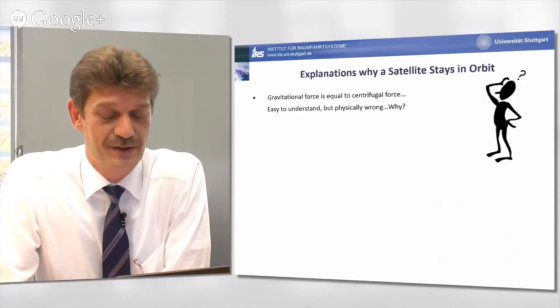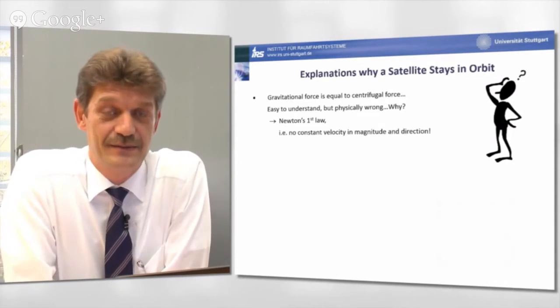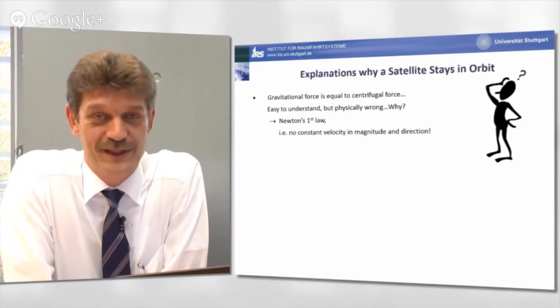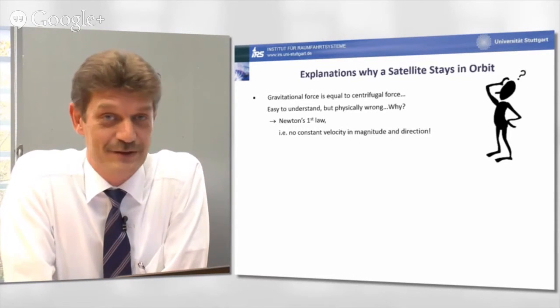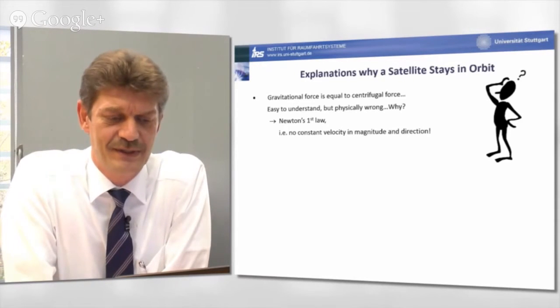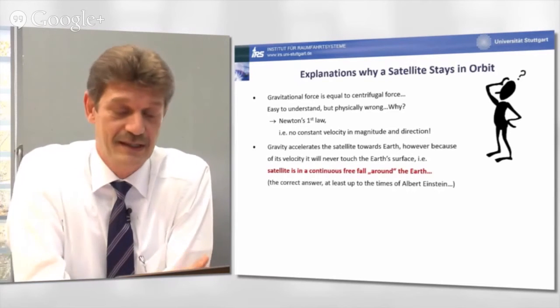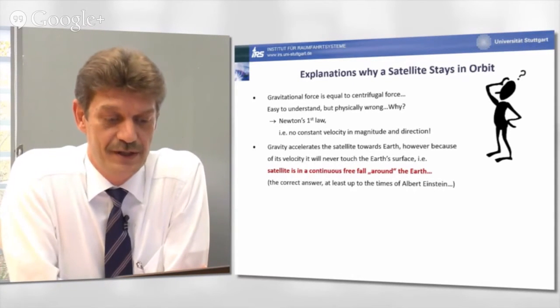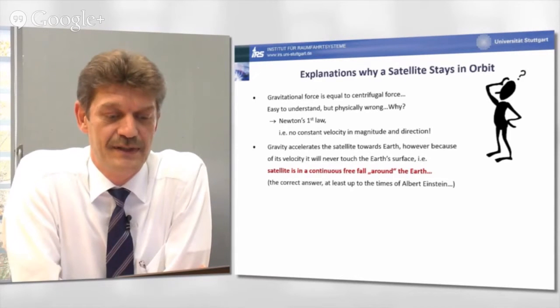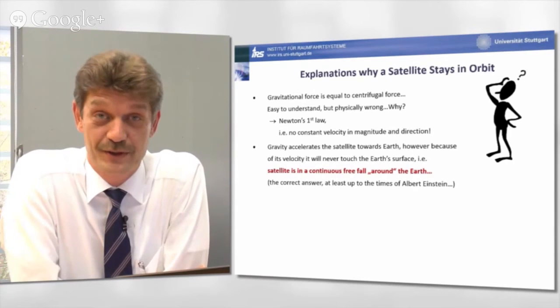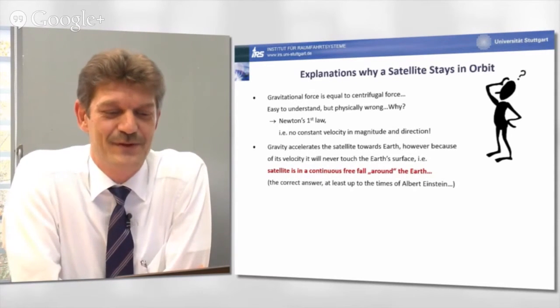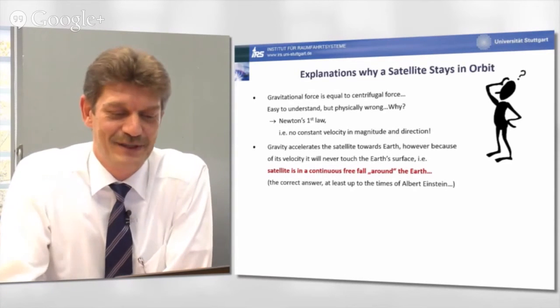Well, just recall Newton's first law, stating that unless acted upon an unbalanced force, an object will maintain a constant velocity in magnitude and direction, and an orbiting satellite has not a constant velocity in direction. It's changing continuously in the velocity direction as it is orbiting the Earth. So, the correct answer would be that the gravity accelerates the satellite towards the Earth. However, because of its own velocity, the velocity of the satellite, it will never touch the Earth's surface. The falling curve is comparable to the curvature of the Earth's radius, which means nothing else than that the satellite is in a continuous free fall around the Earth.